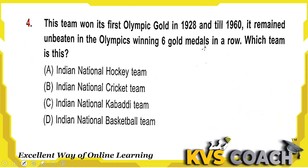Next: this team won the first Olympic gold in 1928 and till 1960 it remained unbeaten in the Olympics, winning 6 gold medals in a row. Which team is this? This is our Indian national hockey team, which won 6 gold medals in a row. Option B, national cricket team, is wrong because cricket is not an Olympic game. Kabaddi is also not an Olympic game. Basketball is an Olympic game but the basketball team never won gold medal. The right answer is option A only.